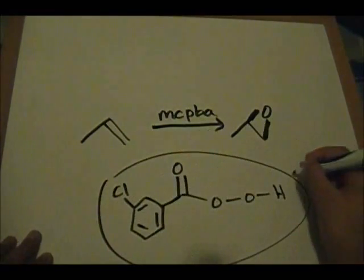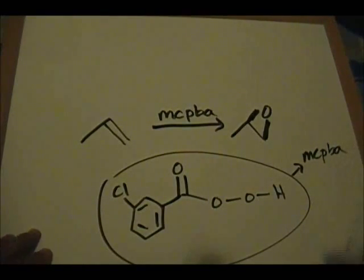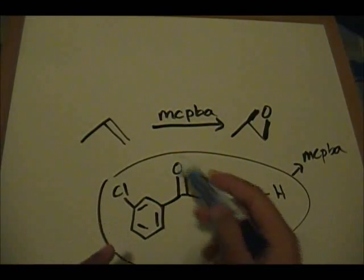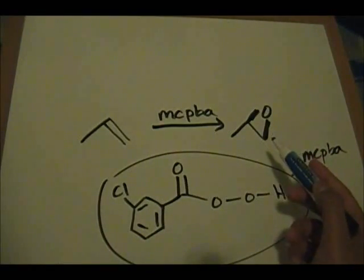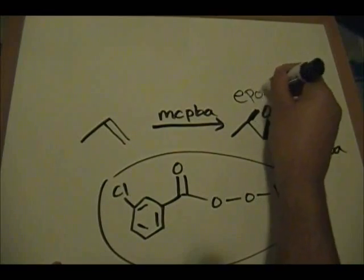This thing here, MCPBA, that's what it looks like. So this is the structure you're reacting with your alkene to form your epoxide. So again, this is your epoxide.